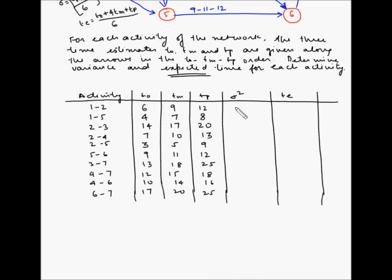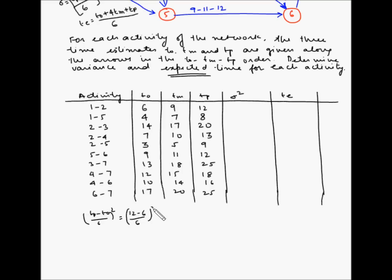Now let's calculate the variance for each of the activities. Sigma squared for the first activity is ((tp minus to) divided by 6) squared. So (12 minus 6) divided by 6, squared: that is (6/6) squared, which equals 1 squared, which equals 1. So the variance for activity 1-2 is 1.